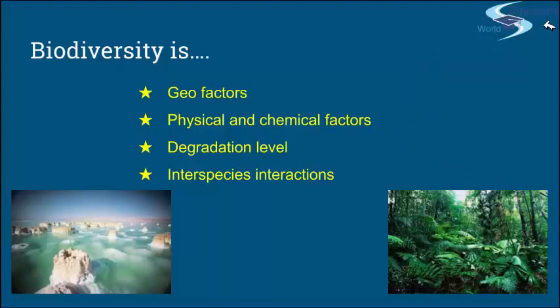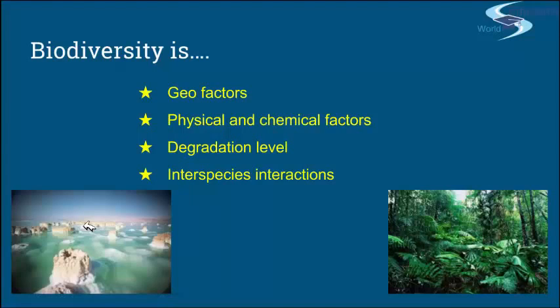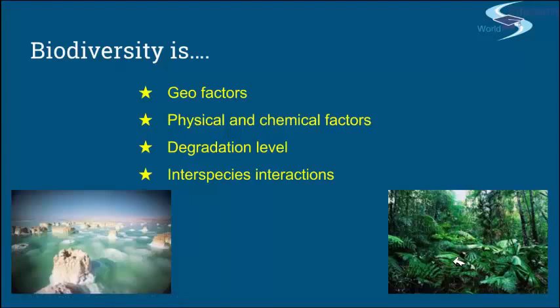For example, the Dead Sea picture you can see here is not really a species-abundant ecosystem due to its harsh conditions. But on the other hand, we have a rainforest — they're flourishing with thousands of different species of plants and animals, because it has good qualities of the surrounding which are pushing species to develop and spread.